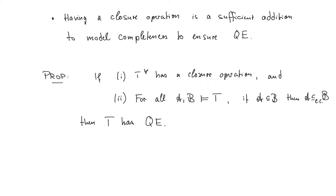Having such a closure operation gives us a sufficient condition that, together with model completeness, will ensure quantifier elimination. Here is the proposition — try to prove it as usual. If: (1) the universal part of T has a closure operation, and (2) for all A, B models of T, if A is a substructure of B then A is existentially closed in B — which is equivalent to model completeness — then T has quantifier elimination.